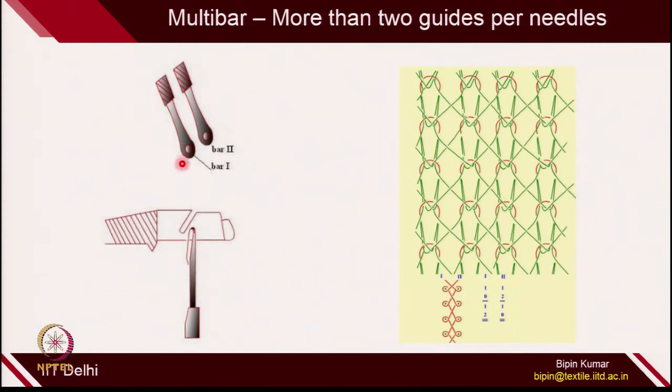When you have a 6 bar construction — bar 1, bar 2, bar 3, bar 4, bar 6 — you need to provide a lapping plan for all 6 bars. In today's lecture, we are going to focus mainly on double bar constructions with 2 bars. If you understand 2 bars, then 3 bar and 4 bar is just a generalization of the principles used in 2 bar construction.